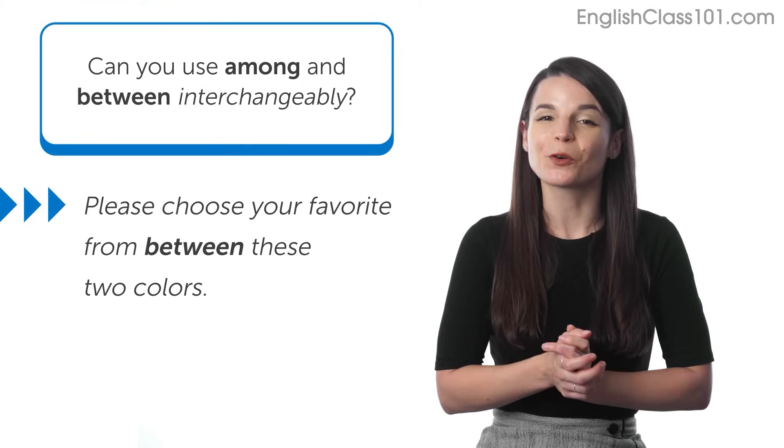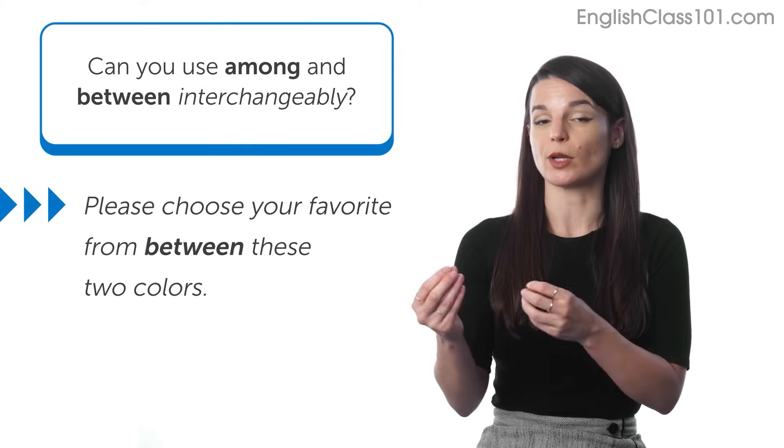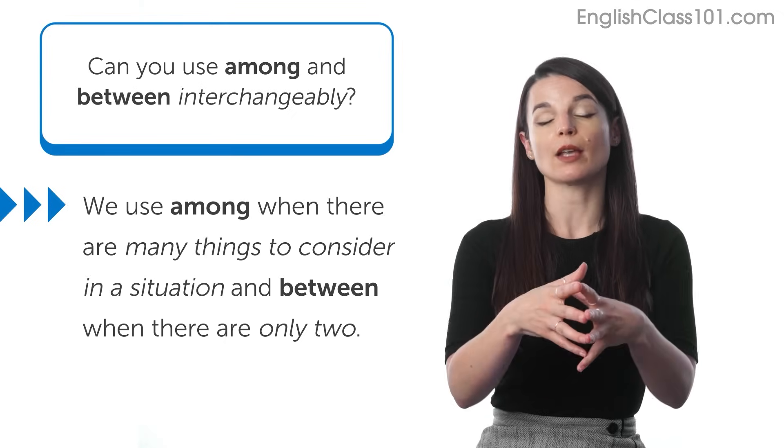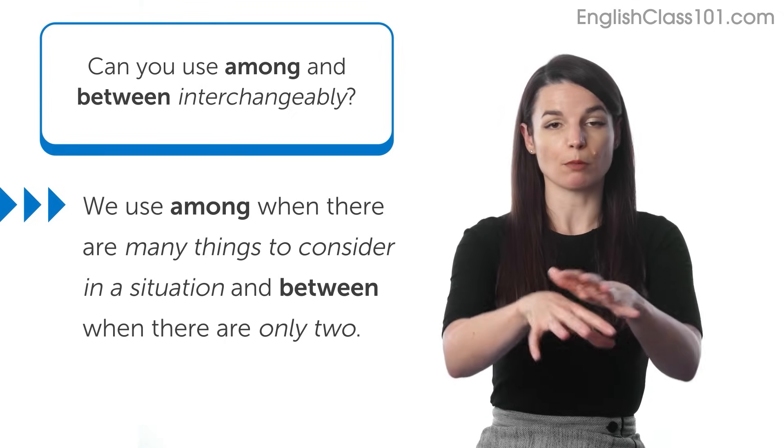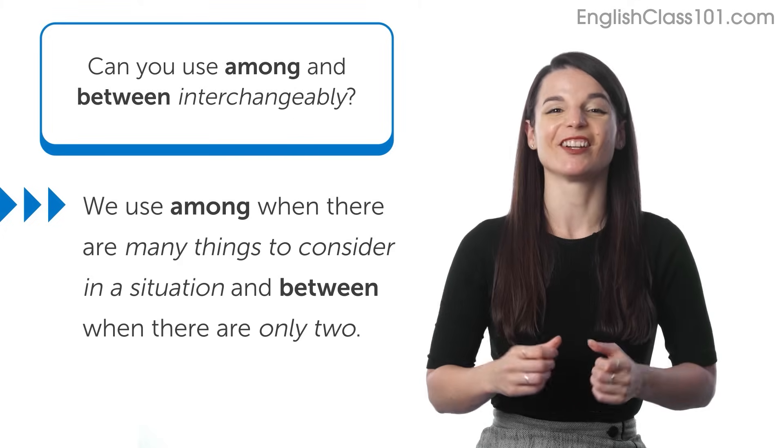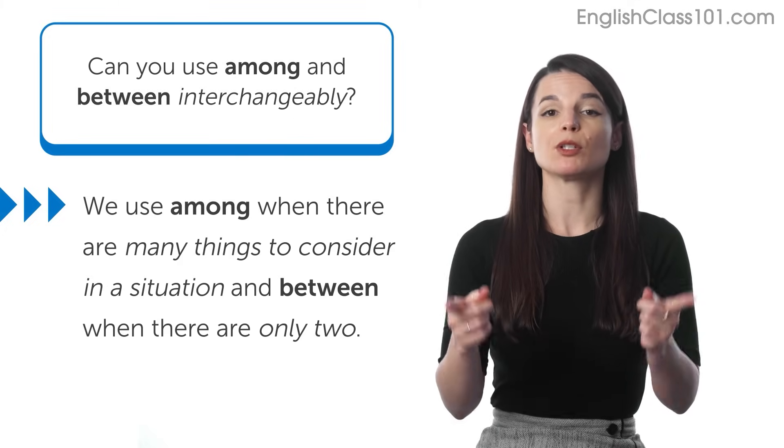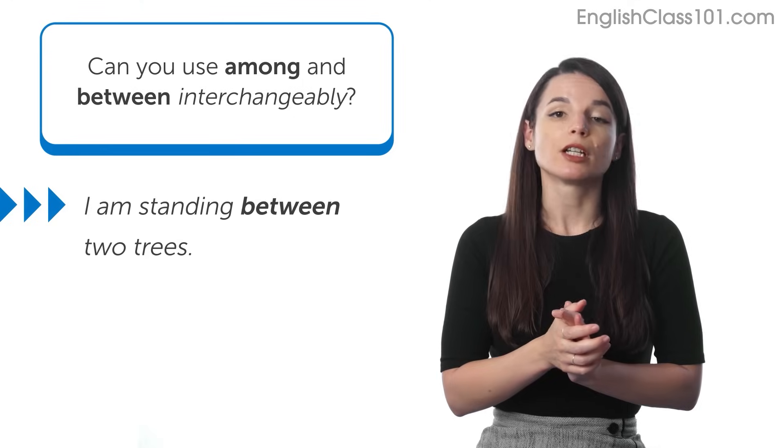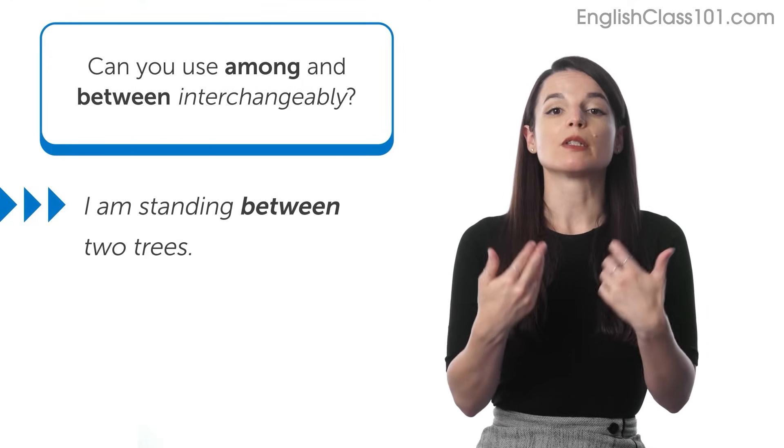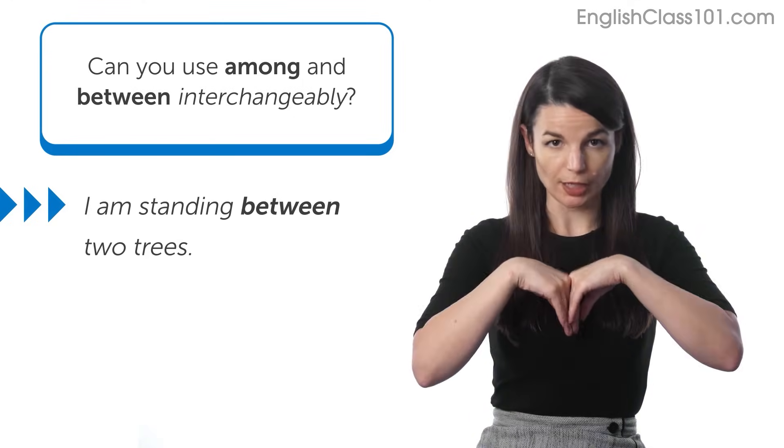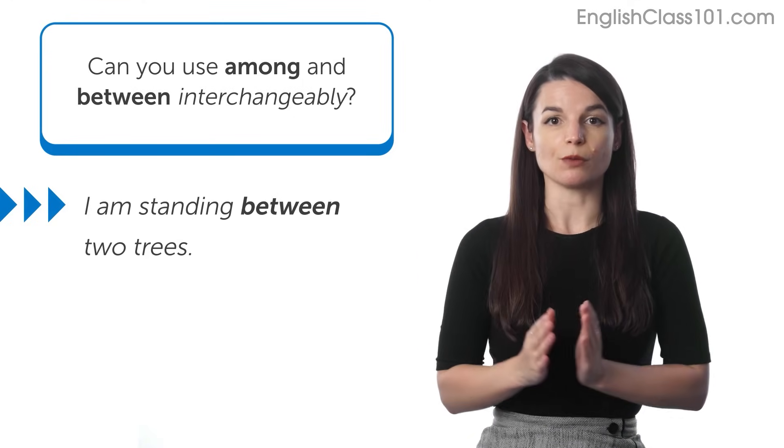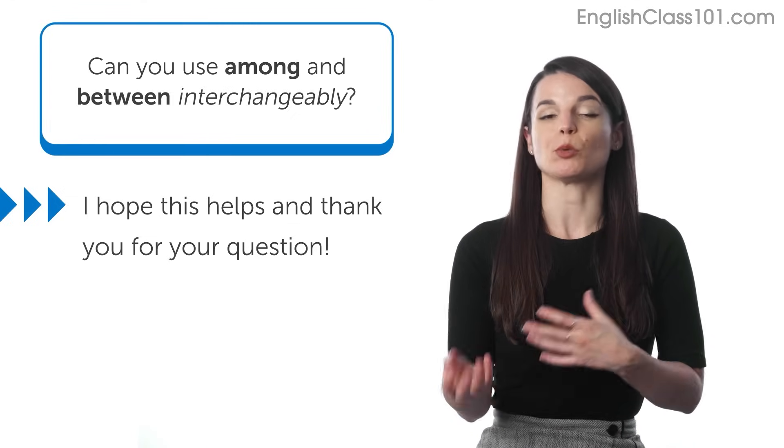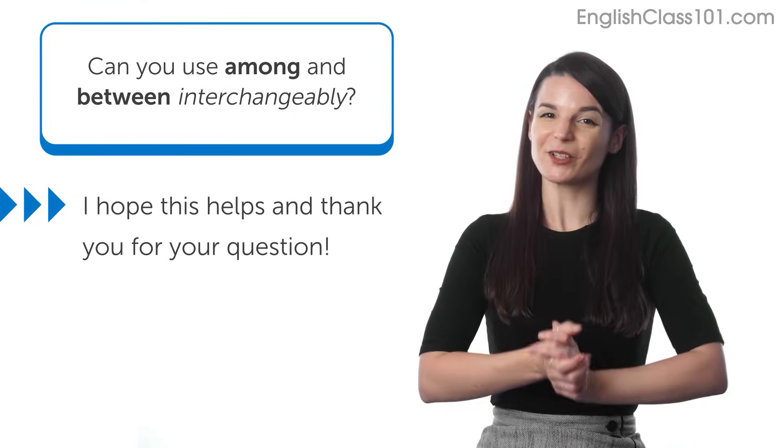So this was a really quick breakdown of the differences between among and between. But the general guide to keep in mind is that we use among when there are many options or many choices or many things to consider in the situation. And we use between when there are two things to consider in the situation. In my earlier example about the forest, we also use between to talk about a position that is in the middle of two things. So I hope that this quick answer helps you understand the differences between among and between. Thanks so much for sending it along.